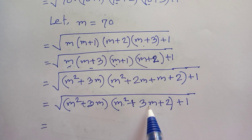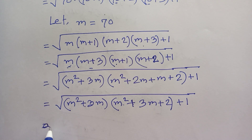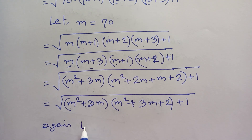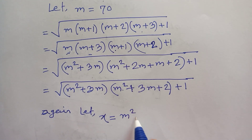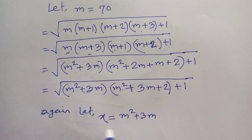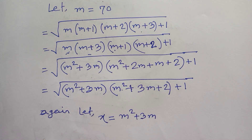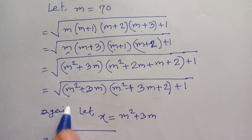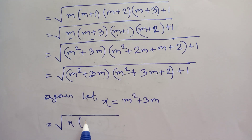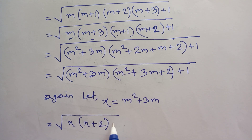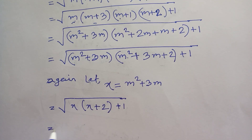Notice both groups contain m²+3m. Let x equal m²+3m. So our equation becomes: under square root of x times (x+2) plus 1, which expands to x²+2x+1.